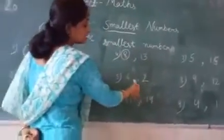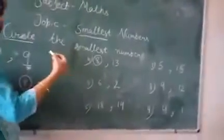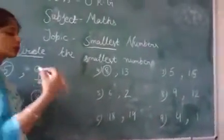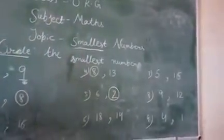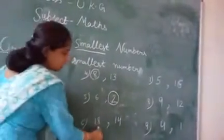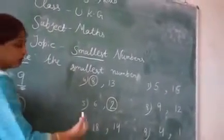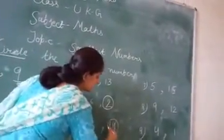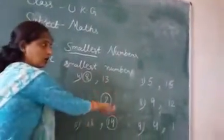Next is 6 and 2. Our numbers are 6 and 2. Counting 1, 2, 3, 4, 5, 6 — 2 comes first, so 2 is the smallest number. Next: 18 and 14. The smallest number is 14 because 14 comes before 18.